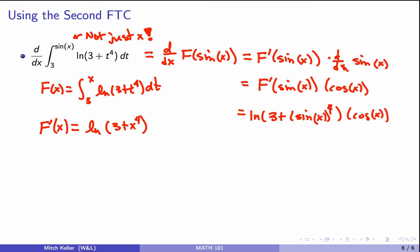If you do this problem, go ahead and think about what happens if I change the sine x to something else. What is the derivative with respect to x of the integral from 3 to x cubed of the natural log of 3 plus t to the fourth dt?